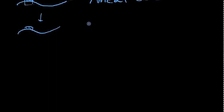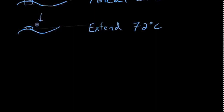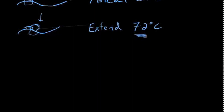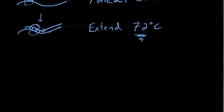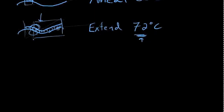Then we run the extension reaction at 72 degrees Celsius. The polymerase gets on the primed site and extends the strand all the way down as far as it can go, making a copy of all the downstream sequence. So the primer started out being just a short piece, but now it's been extended to copy this whole block of sequence.